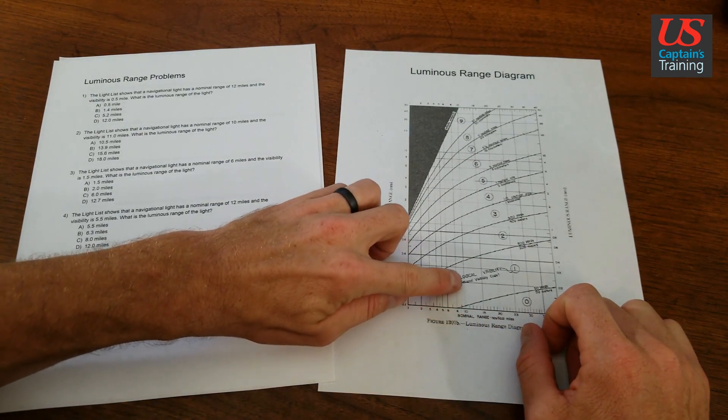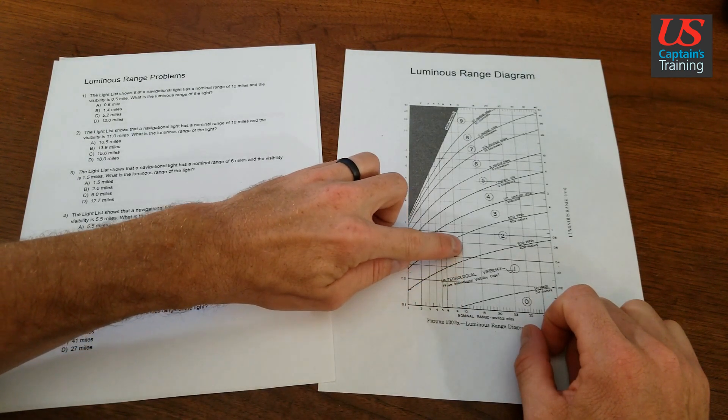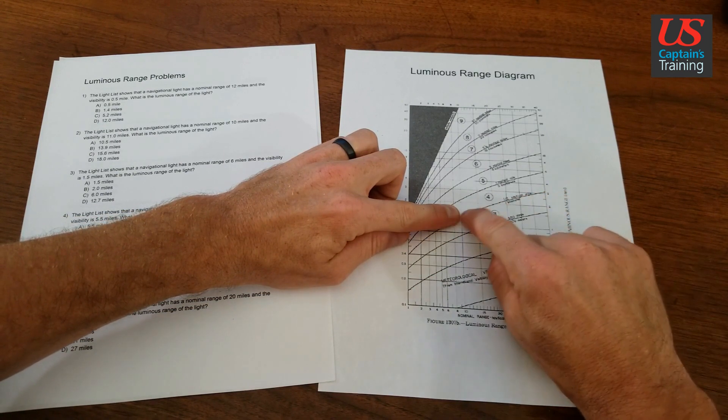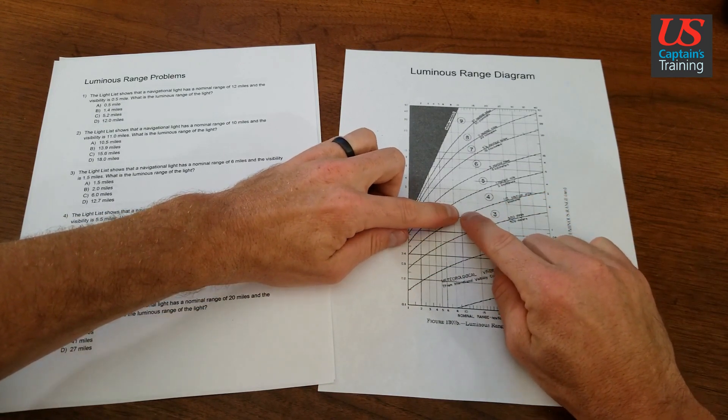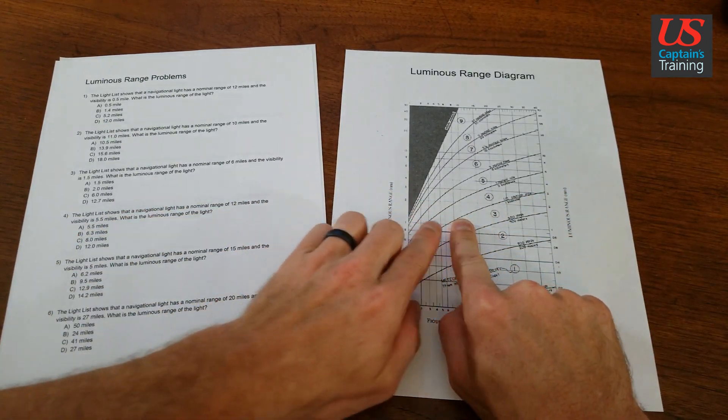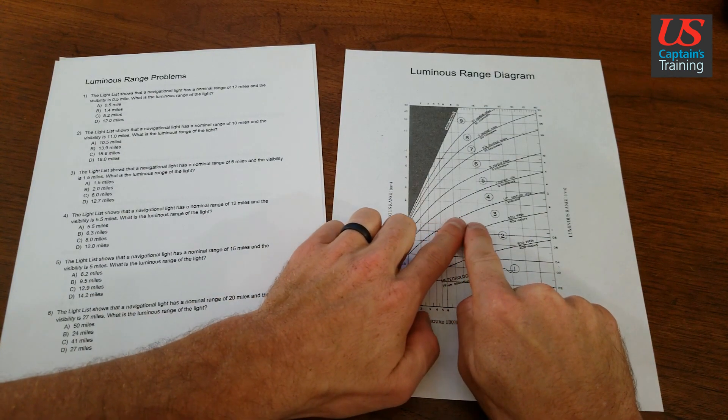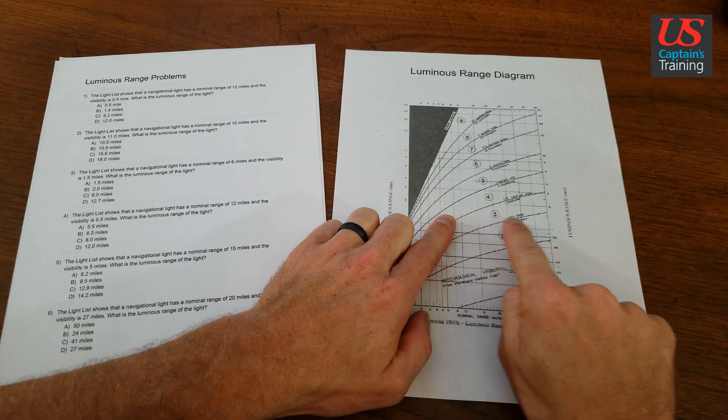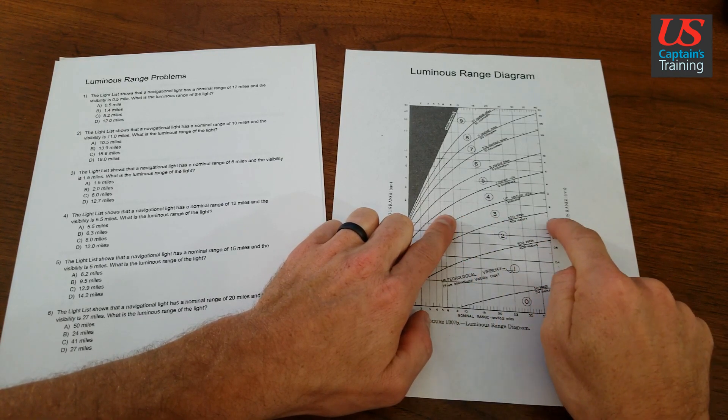we follow the nominal range up until it intersects the visibility curve of half a nautical mile. So then we're right at this point. And then what we do is take that point there and we take it out horizontally and we meet up with the side scale for luminous range.